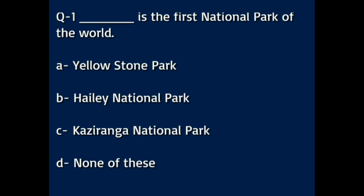Question number one: which is the first national park of the world? Option A: Yellowstone Park. Option B: Haley National Park. Option C: Kaziranga National Park. Option D: none of these. The answer to this question is Yellowstone Park.